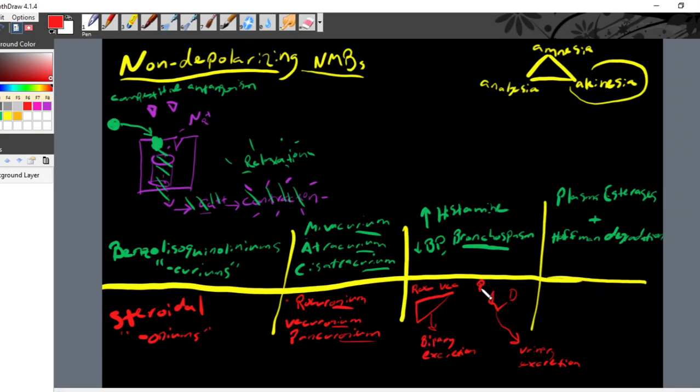Pancuronium is more so excreted through the urinary system than it is through the biliary system. So again, all of this stuff relates to how or what type of medication you're going to use based on your patients. In another video, we'll talk about what prolongs the blockade and how we can measure blockade, how we can measure the effects of these paralytics or neuromuscular blocking agents that we use.